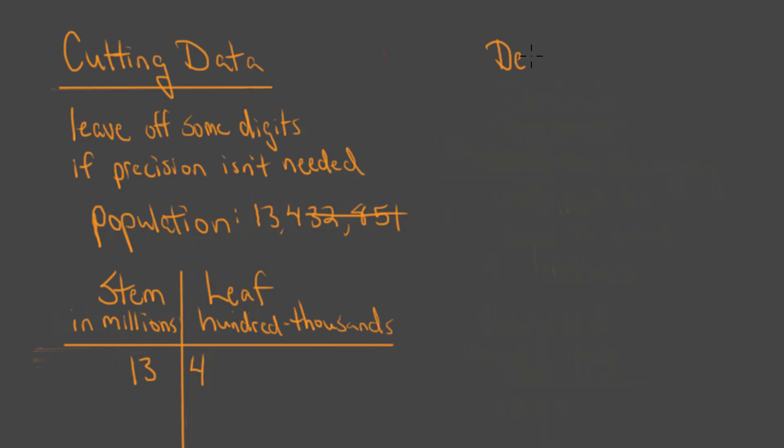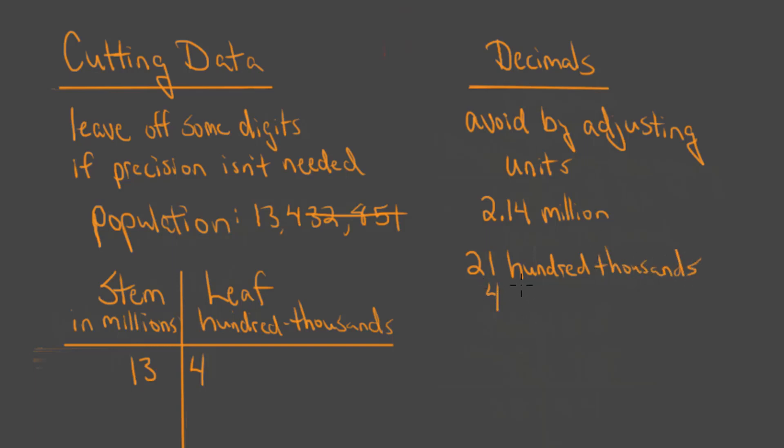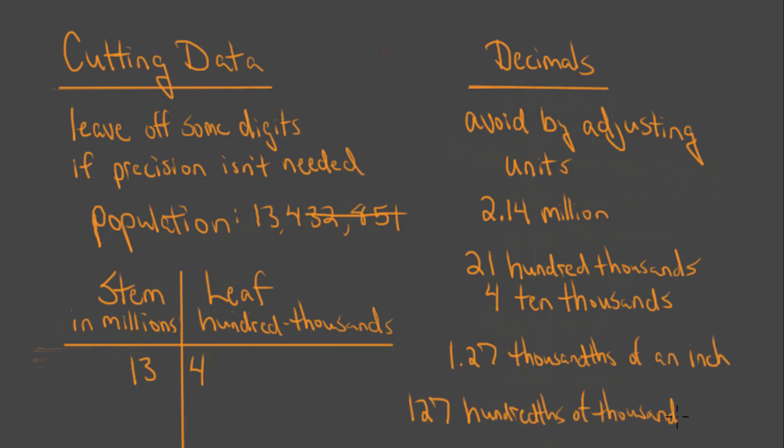The same would be true for decimal places. Tukey considered decimals a liability. They make data harder to look at, and they increase the chance of making errors. So he suggested using units that eliminate the need for decimals whenever possible. Large numbers with decimals like 2.14 million could be represented with a stem of 2100 thousands and a leaf of 4 ten thousands. Or instead of having a table labeled with thousandths of an inch and using 1.27, this could be labeled as hundredths of thousandths of an inch, allowing us to use 127 hundredths of thousandths of an inch, although I'm struggling to say hundredths of thousandths of an inch several times is a pretty strong argument for just adopting the metric system.